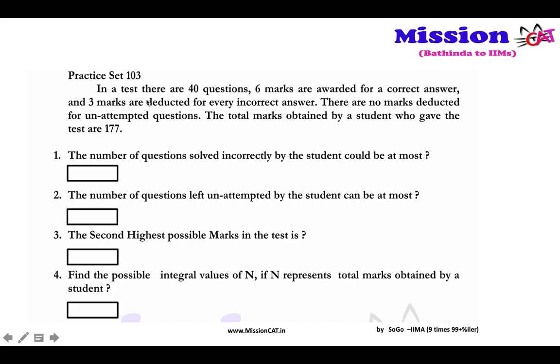Now, let us read this question. I hope you all have gone through that. This question says there are 40 questions, 6 marks are awarded for a correct answer and 3 are deducted for every incorrect answer. There are no marks deducted for unattempted questions. Total marks obtained by a student who gave the test are 177. So there is a particular student given to us which marks are 177, so we need to know that there are 4 questions. This is a typical question in CAT, which is a question in logic, in fact numeric.